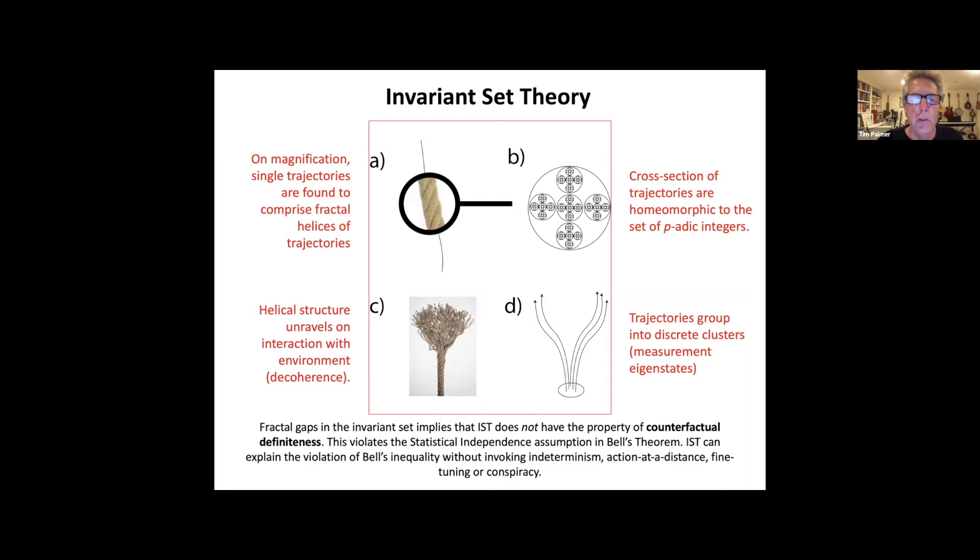If you took a cross section through that piece of rope, you look at something like b. This cross section is actually isomorphic or homomorphic to the set of p-adic integers. So in fact, p-adic arithmetic is actually the appropriate mathematical form to describe things like time evolution on the invariant set because of the homomorphism between p-adic sets and fractal geometry.